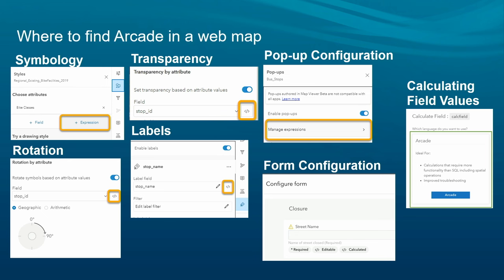Arcade is finding its way into just about everything. In the context of the web map, the places you can access and use Arcade are: symbology — driving transparency, rotation, and labels — pop-up configuration, two different types of pop-up configuration, and smart forms, where you can drive business logic to dynamically hide and show input boxes or automatically calculate values. Field calc is also another place where Arcade is exposed, allowing you to burn in values and make them part of your dataset.